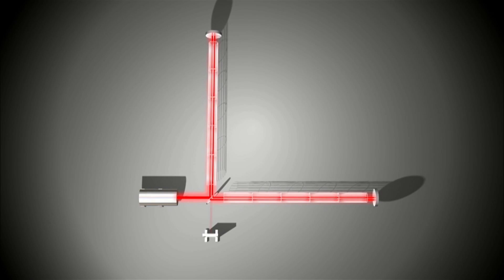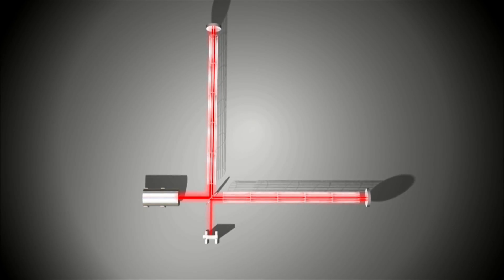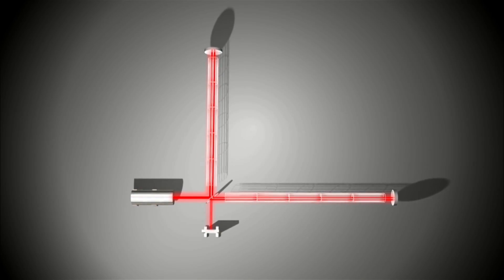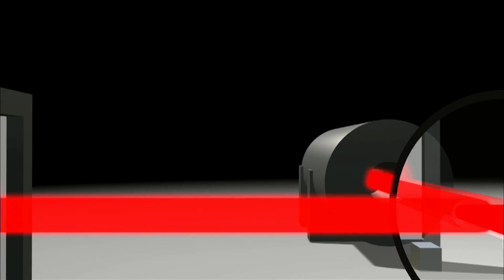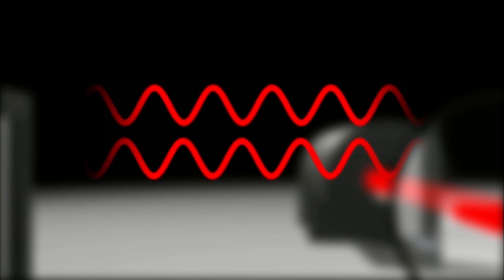This back and forth stretching and squeezing happens over and over until the wave has passed. As the distances change, so does the alignment between the peaks and valleys of the two returning light waves. And the light waves no longer cancel each other out when added together in the recombined beam.